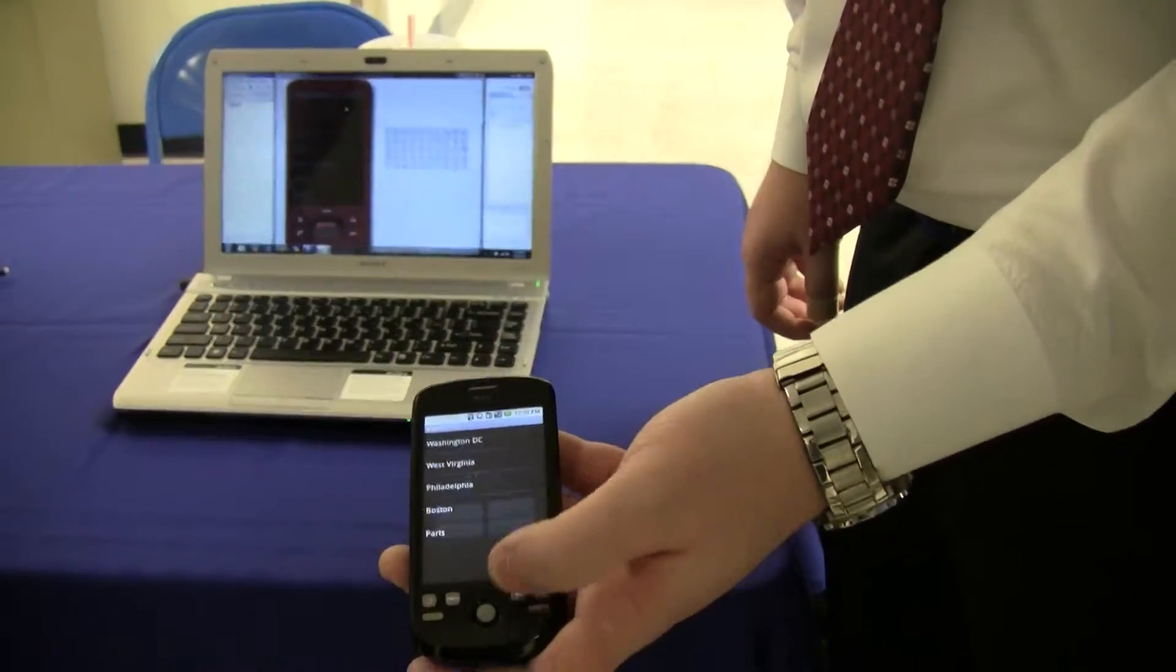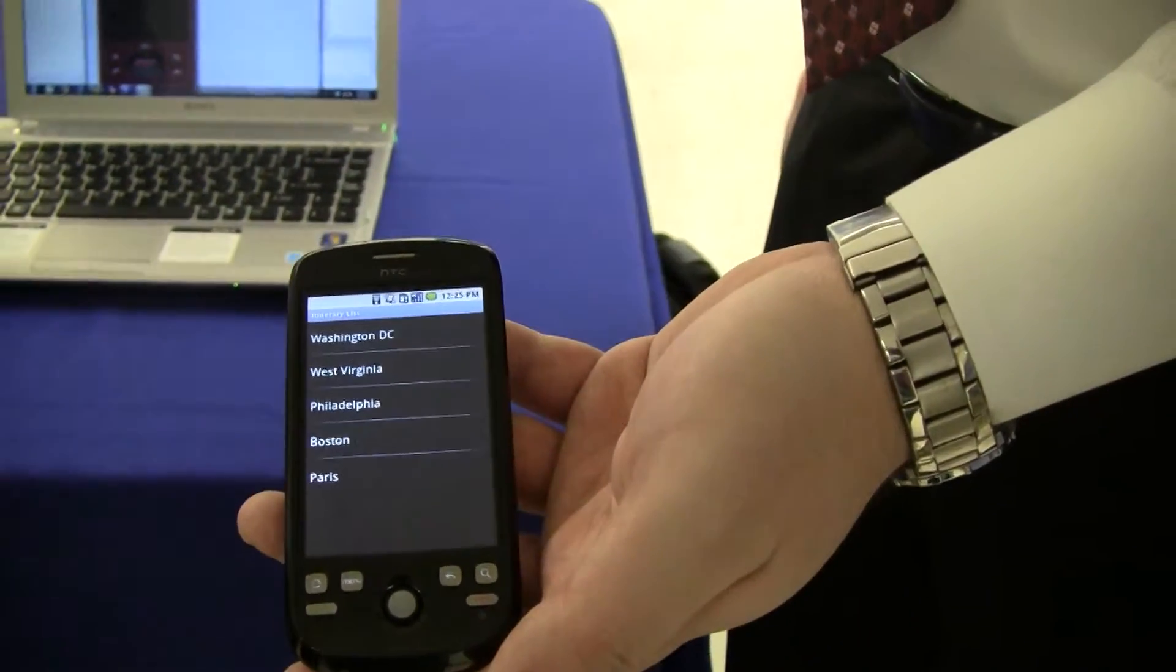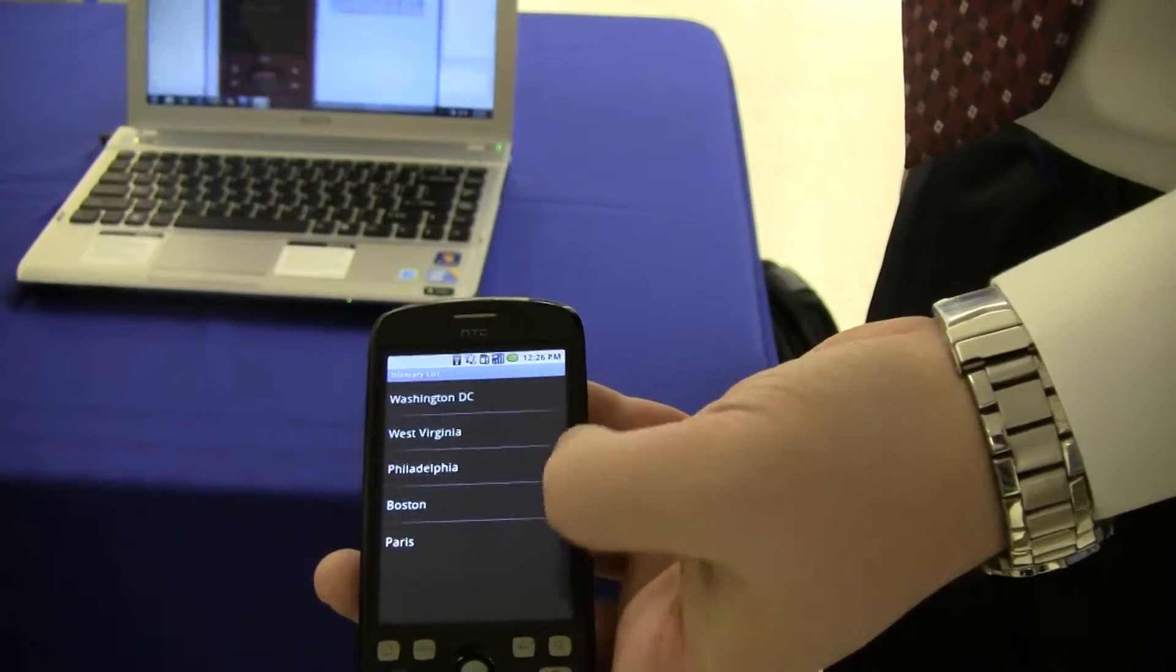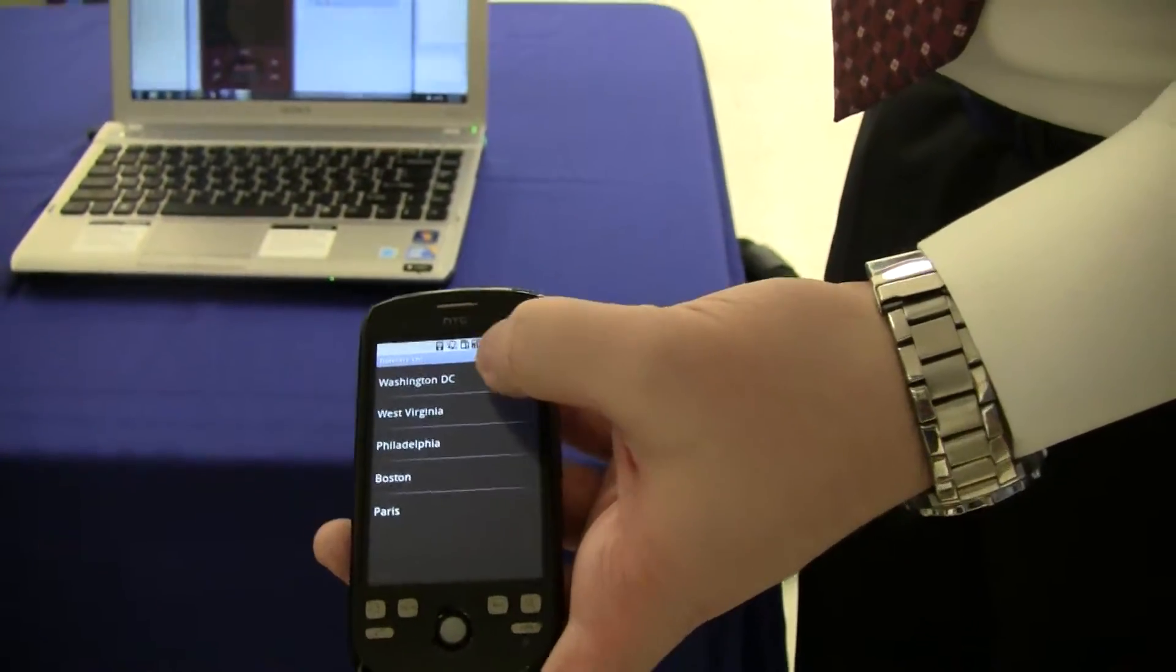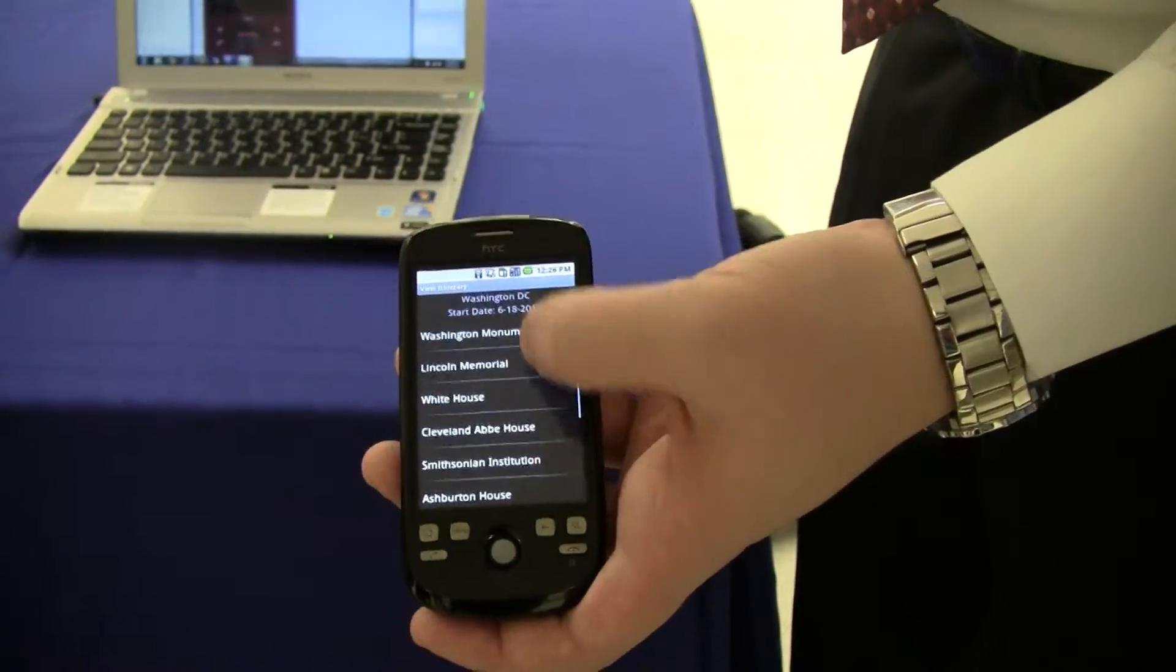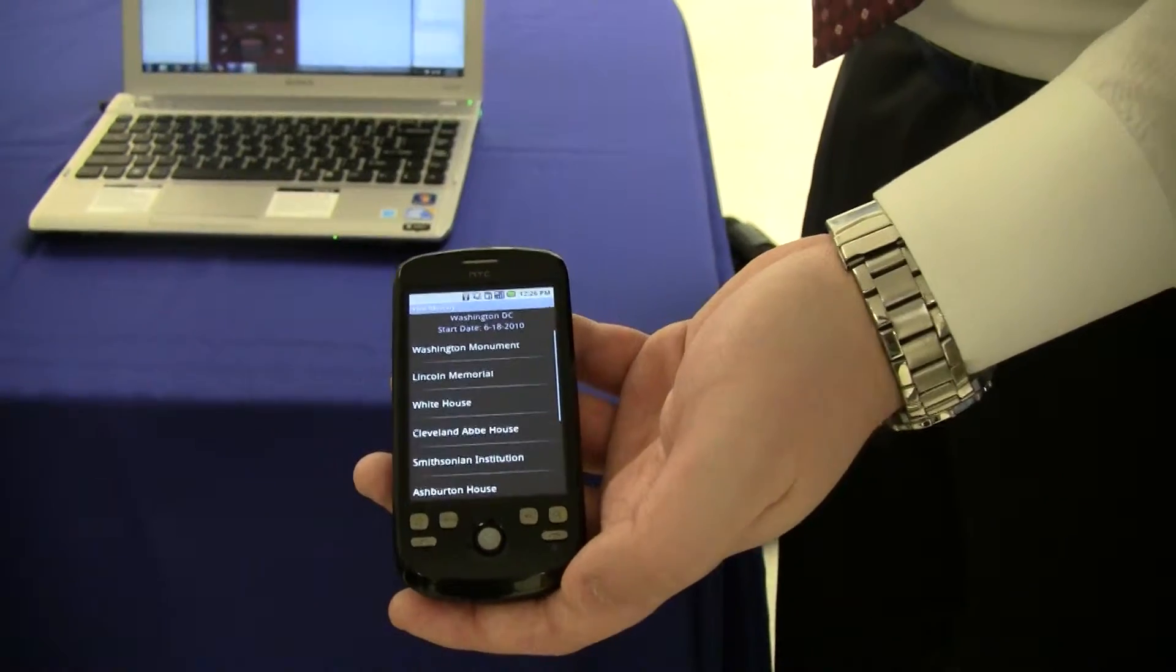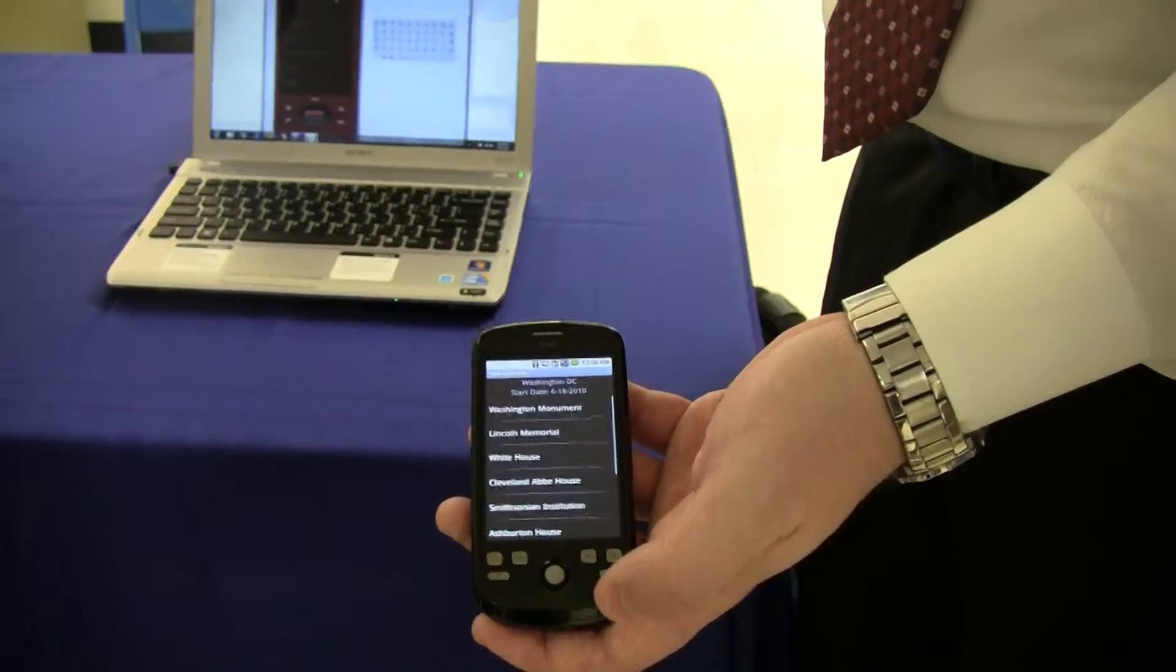If we go to itinerary, the goal of itinerary is to allow the user to plan a trip. So we have some preset ones here that we've done with locations in different areas. If we view the Washington DC one, you'll see the locations that we've inserted. Clicking any of these locations will take us back to the information on that location.